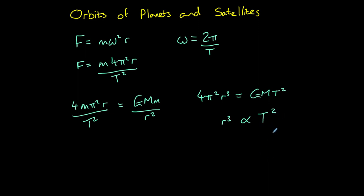This is known as Kepler's third law. The square of the orbital period of a planet is directly proportional to the cube of the radius of its orbit. It was thanks to Kepler's observation of this pattern that Newton was able to develop his law of gravitation.